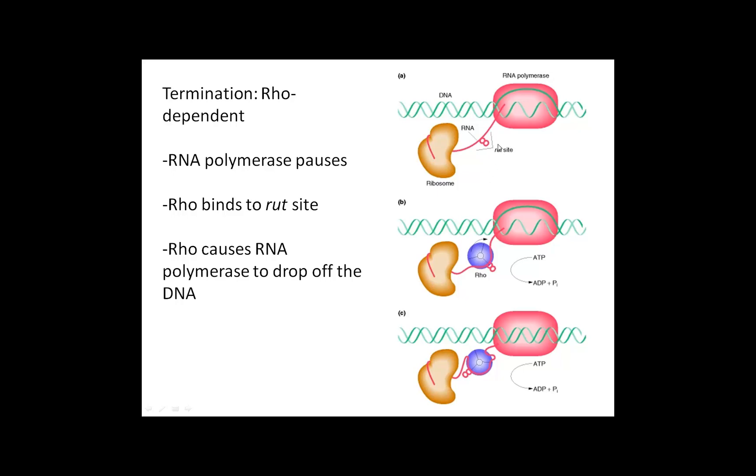Here's the RNA that's coming out of that transcription bubble. There is a particular sequence on the RNA that is being synthesized called the RUT site, R-U-T. The RUT site is where Rho actually binds.